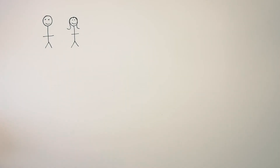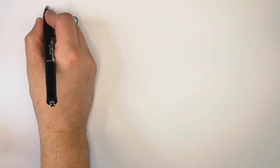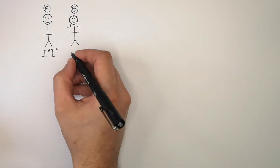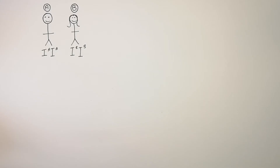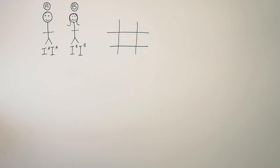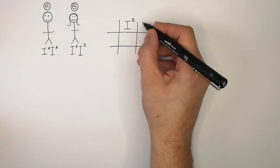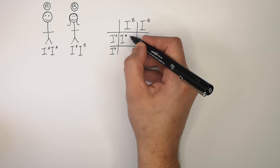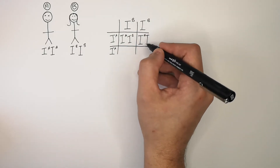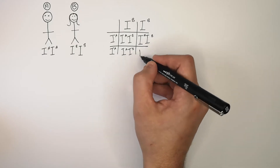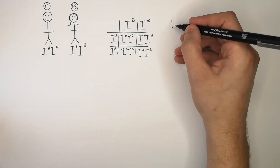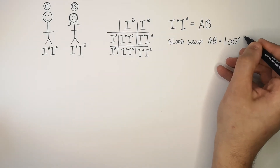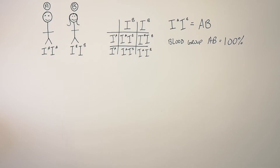Let's now do a genetic cross using a Punnett square. The man is blood group A with genotype IA, IA, and the female is blood group B with genotype IB, IB. Placing their possible gametes into the Punnett square — IB and IB for the woman, IA and IA for the man — every possible combination gives the genotype IA, IB. So the chance of the IA, IB genotype is 100%, meaning all of their children can only have blood group AB.